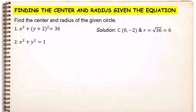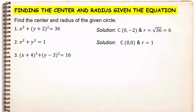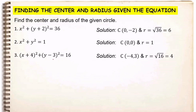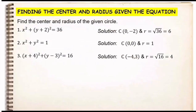For number 2, x² + y² = 1. This equation is centered at the origin and the radius equals 1, because the square root of 1 is 1. For number 3, the center is not at the origin but at (−4, 3). Remember: if the value inside the equation is positive, the coordinate becomes negative, and if it is negative inside, it becomes positive — so positive 4 becomes −4 and negative 3 becomes +3. The radius is the square root of 16, which is 4.